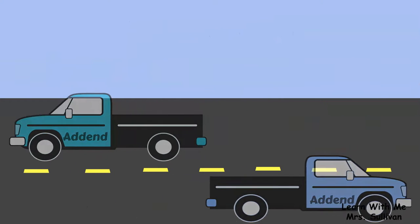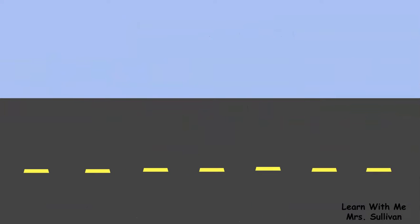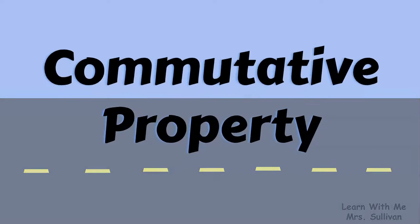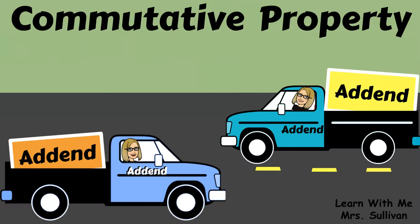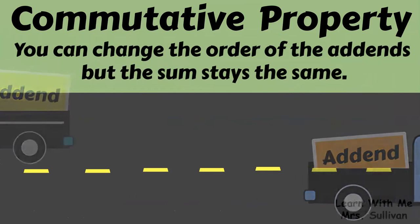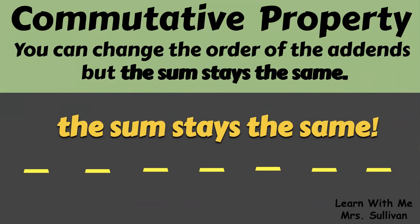The addends in an addition equation can also commute. We call this the commutative property. The commutative property means you can change the order of the addends, but the sum stays the same.